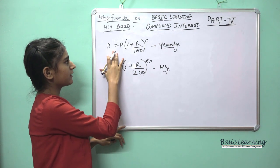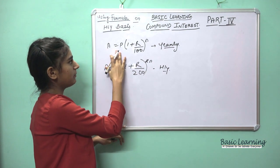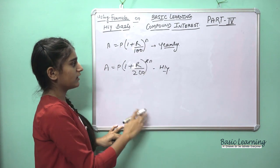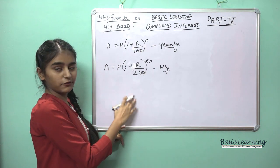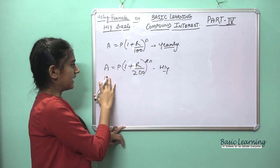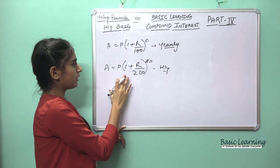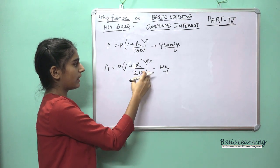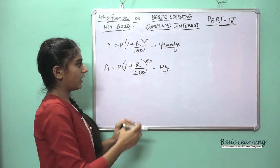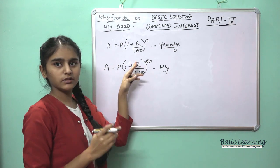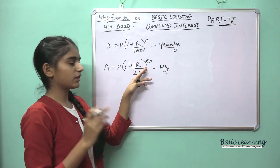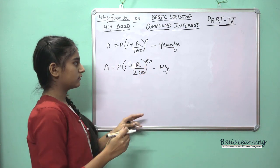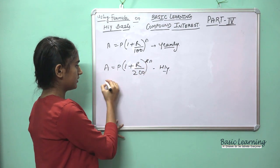On yearly basis we had A = P(1 + R/100)^n. For half-yearly basis it is A = P(1 + R/200)^2n. We are multiplying the number of years — the duration of time — by two.